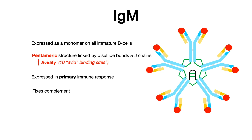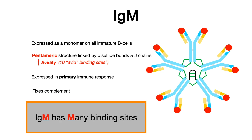IgM is expressed as a monomer on all immature B cells, so one way to think about IgM is that it's the default isotype, expressed before any type of differentiation occurs. IgM is expressed in the primary immune response, and it does fix complement. For USMLE and COMLEX, know its pentameric structure, its default nature, and its high avidity. Remember: IgM — M for meric, M for many binding sites.